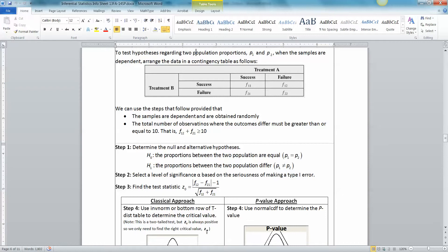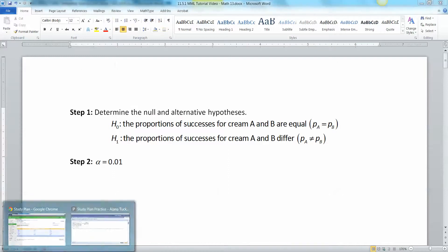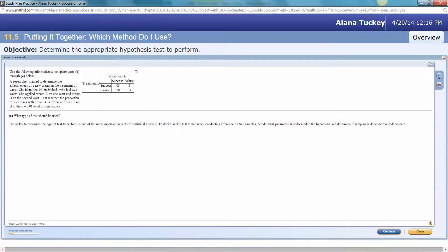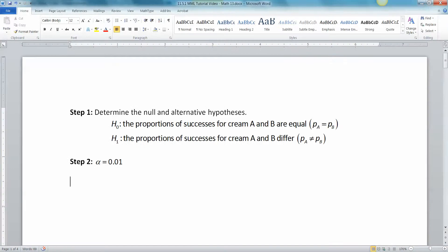Then you need your test statistic, which is Z₀ equals |f₁₂ - f₂₁| - 1 over the square root of f₁₂ plus f₂₁. Now remember f₁₂ is in the top right corner, f₂₁ is in the bottom left corner. So if we look at our problem, f₁₂ is 8 and f₂₁ is 20. So let me bring up the calculation here. There it is. I already did this.